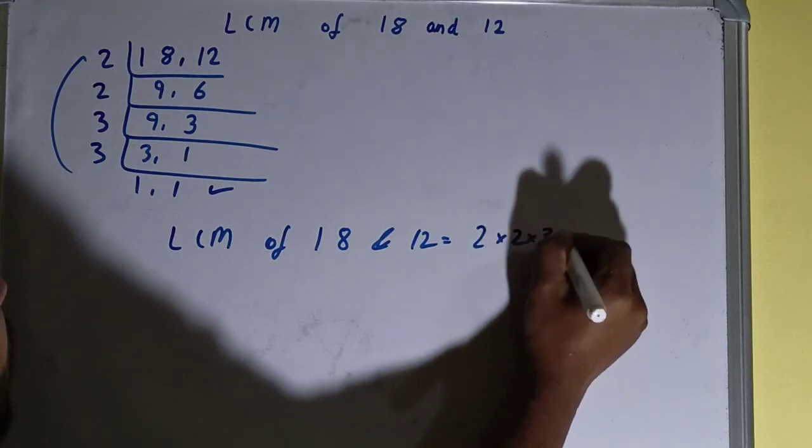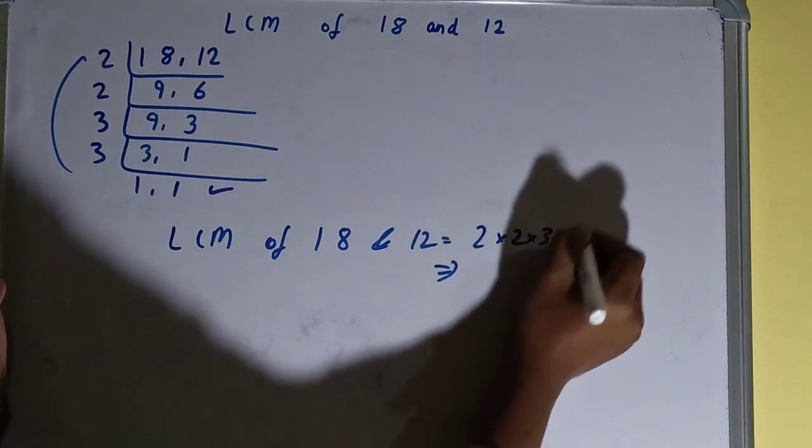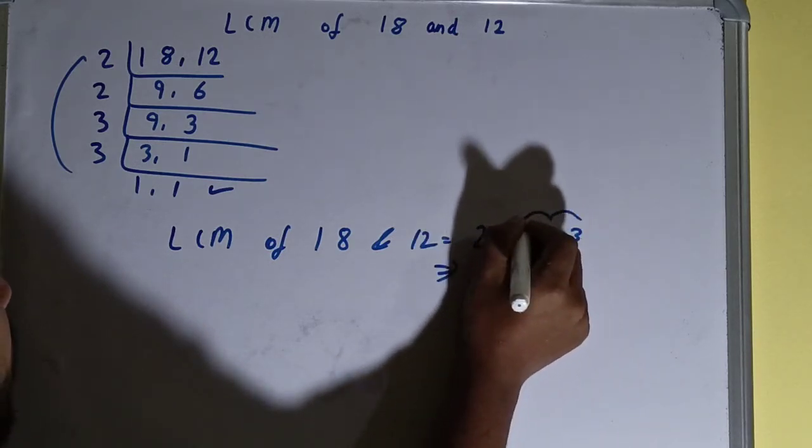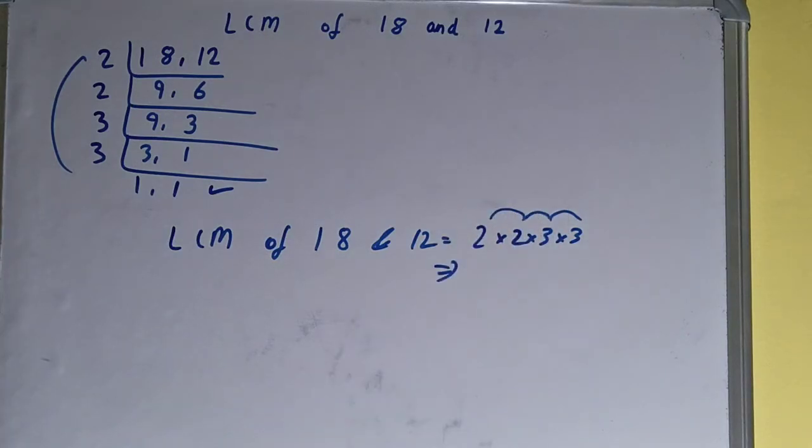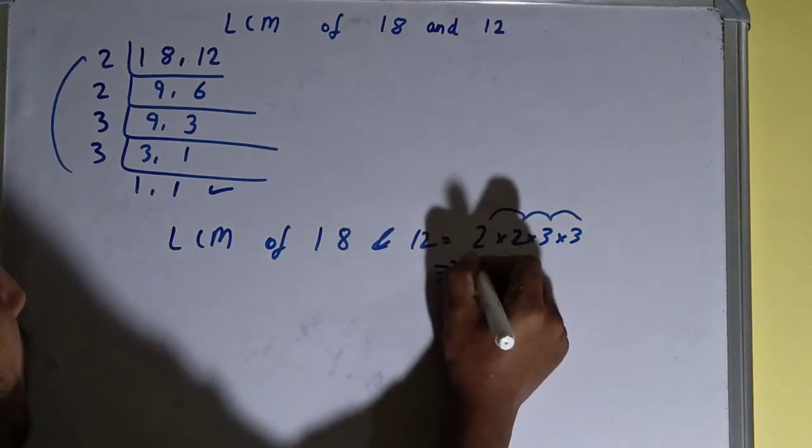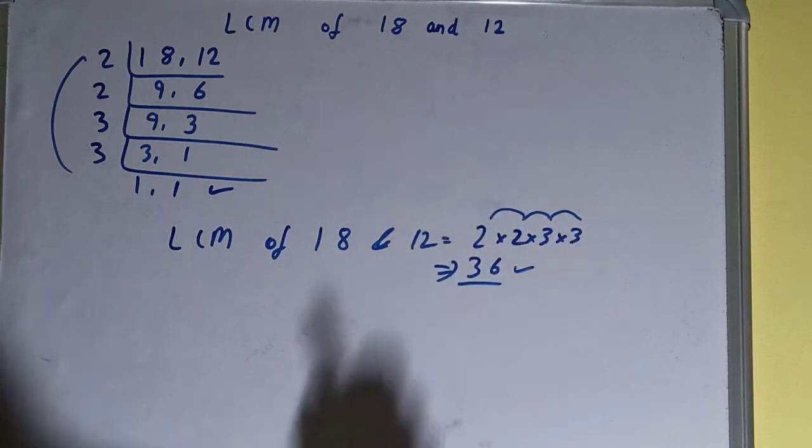So the answer will be: 3 × 3 is 9, 9 × 2 is 18, 18 × 2 is 36. So the answer, or the LCM, will be 36. So this is all about LCM of 18 and 12.